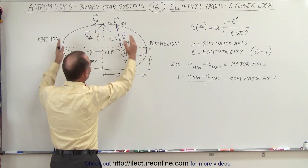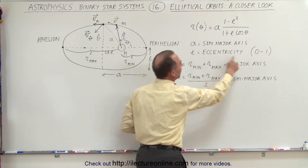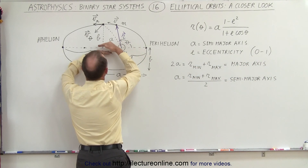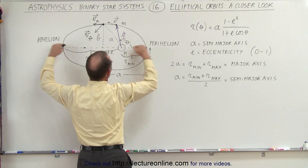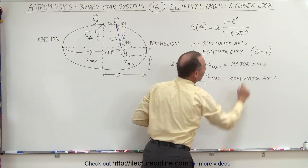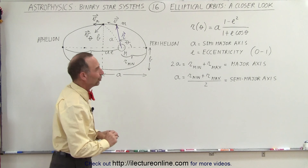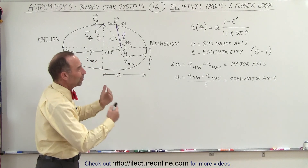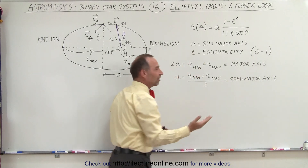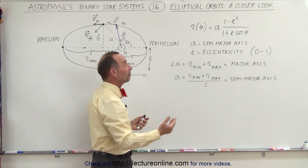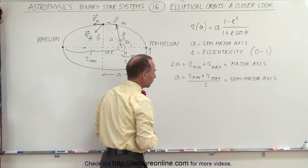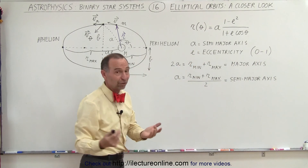If the orbit is perfectly circular, the eccentricity will be equal to 0. If it's perfectly flat — a flat line with no distance in the vertical direction — then the eccentricity will be 1. Typically it's somewhere in between, and most orbits are very close to 0, with some exceptions such as Pluto, which has quite some eccentricity — a number much bigger than 0 but much smaller than 1.